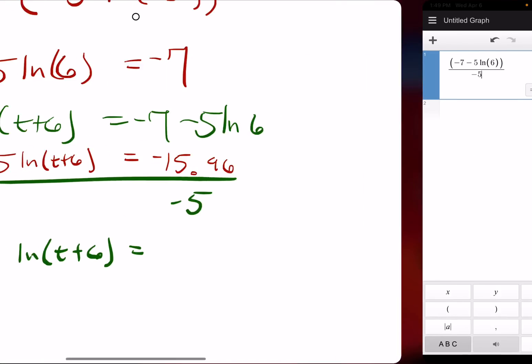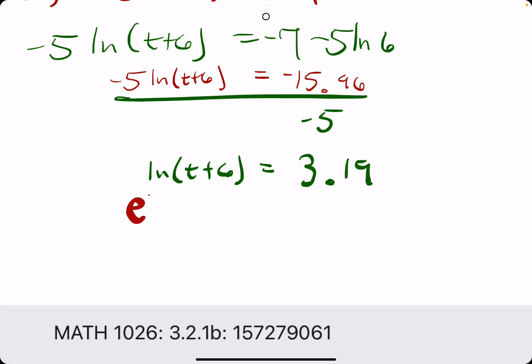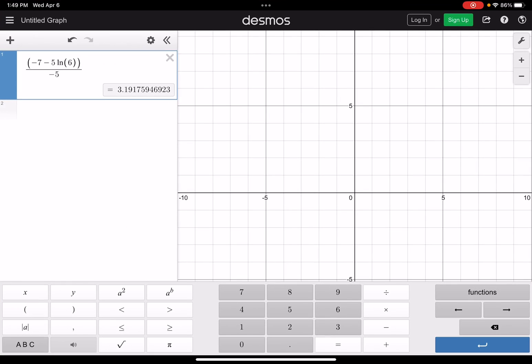We are dividing by negative five and we will get ln of t plus six equals 3.19. Now to eliminate a natural log in any equation, we want to make e the base of both sides, because e raised to the natural log will cancel and just leave us with t plus six. So we have e to the 3.19.